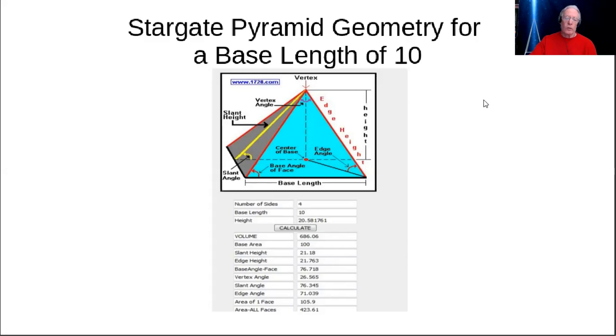That ratio is 2.0581761 to one. That's the number that'll get you to the 76.345 degree slant angle. So if you always make sure that your ratio of height to base length is 2.0581761 to one, then you're going to come up with a slant angle of 76.345 degrees. That's the most important ratio you need to know.